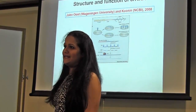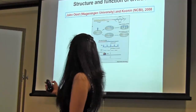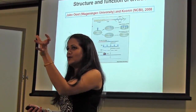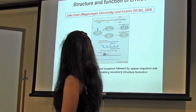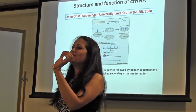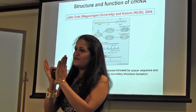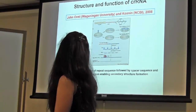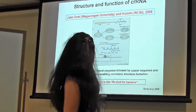Oster and Marraffini in 2008 went further and studied the structure and function of crRNA. crRNA is the combination of the repeat sequence and the spacer element. They concluded that the crRNA starts with eight base pairs of the repeat sequence, followed by the spacer sequence and the beginning of the next repeat sequence, allowing it to form a secondary structure, which is more stable than a normal linear mRNA structure. They said that the CRISPR-based immunity is like a flu shot for bacteria.